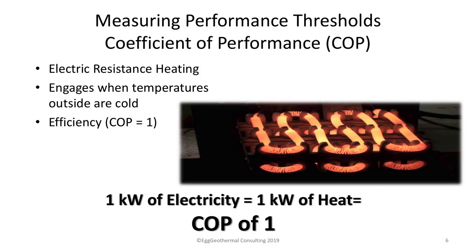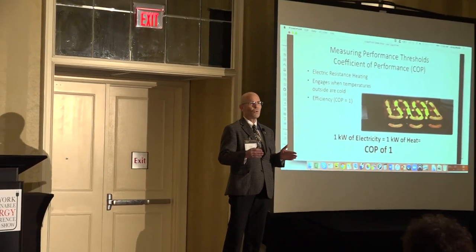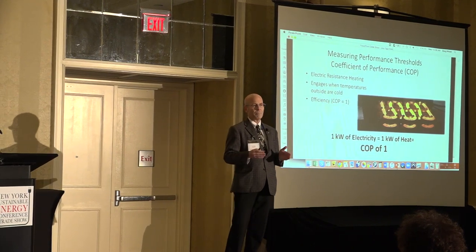To truly understand the magic of heating and cooling appliances, you need to understand how they're rated — in something called coefficient of performance. A gas furnace, if it's good, is between 90% and 98% efficient — that's a COP of 0.90. An electric resistance heat strip, like a room heater or a blow dryer, is 100% efficient — a COP of 1.